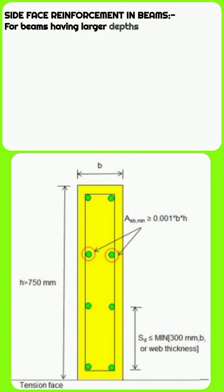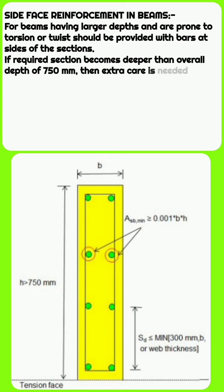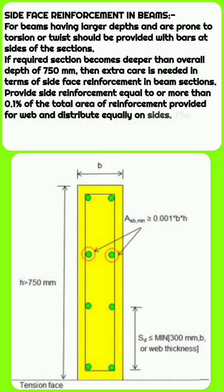Side face reinforcement in beams. For beams having larger depths and are prone to torsion or twist should be provided with bars at sides of the sections. If required section becomes deeper than overall depth of 750 mm, then extra care is needed.